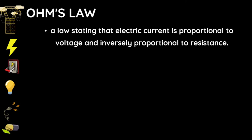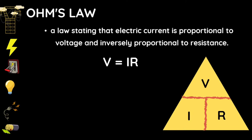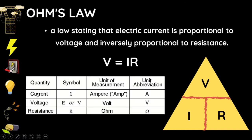Ohm's Law states that electric current is proportional to voltage and inversely proportional to resistance. We will use the formula: V (voltage) equals current multiplied by resistance. The symbol for current is capital letter I, its unit of measurement is ampere, abbreviated as capital letter A. For voltage, the symbol is capital letter E or V, its unit is volt written as capital letter V. For resistance, the symbol is R and its unit is ohm.